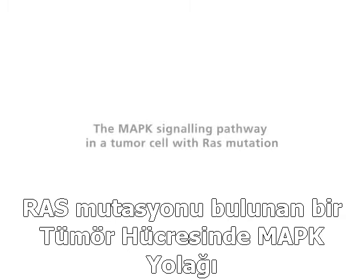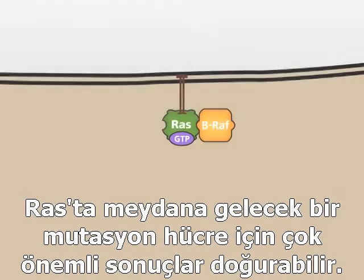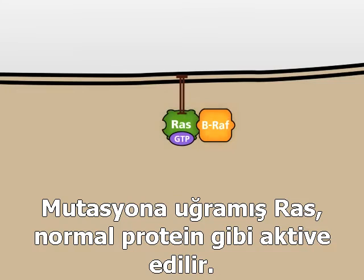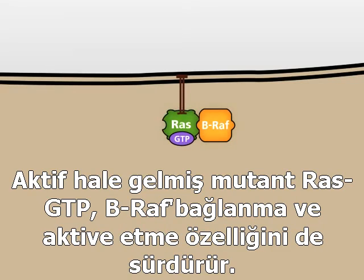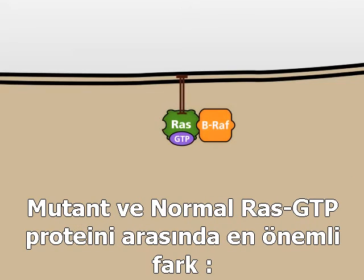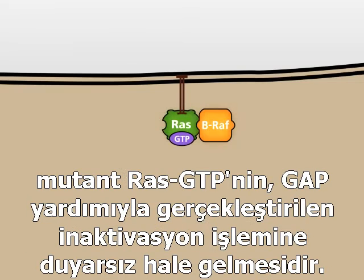The MAPK signaling pathway in a tumor cell with RAS mutation. Mutation of the RAS gene may have dramatic consequences for the cell. Mutated RAS protein is activated just like the normal protein. Mutated active RAS-GTP is also able to bind and to activate the kinase BRAF. A major difference between the mutated and the normal RAS-GTP protein is that the mutated protein loses its capability to be inactivated by the GTPase activating protein GAP.